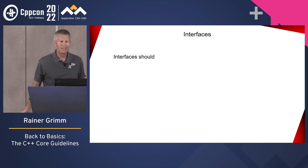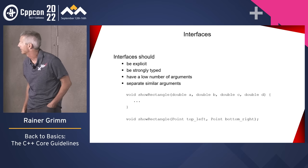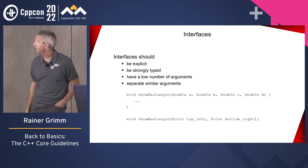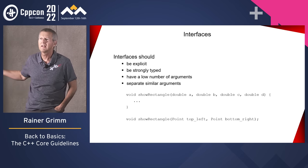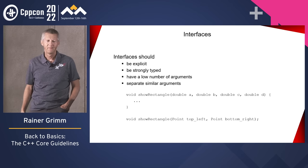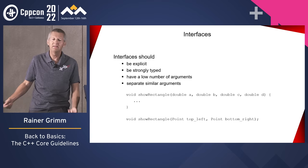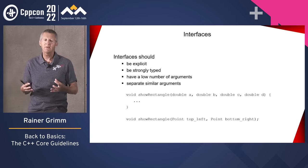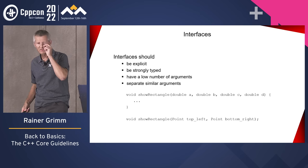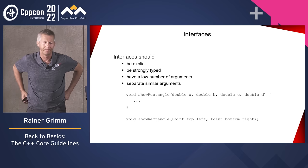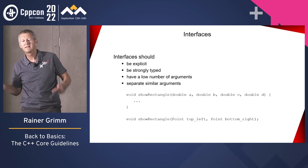Interfaces: explicit interfaces should be explicit, strongly typed, have a low number of arguments, and separate similar arguments. For example, if you want to show a rectangle consisting of two points with X and Y coordinates — if you use four separate doubles named A, B, C, D, you don't know what they mean. The misuse is extremely likely. Instead, use a strong type such as Point, as in the second signature. The misuse of the second version is way less likely than the first.